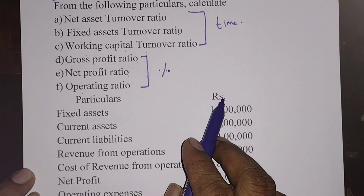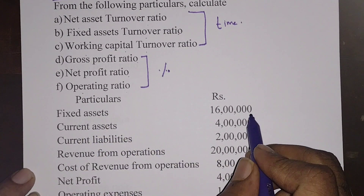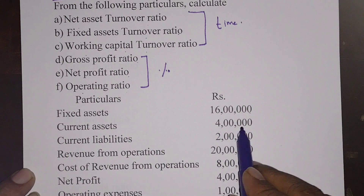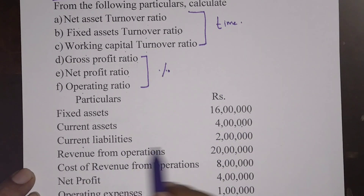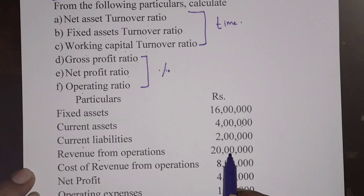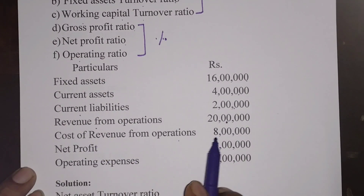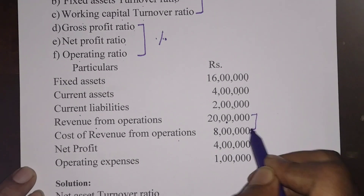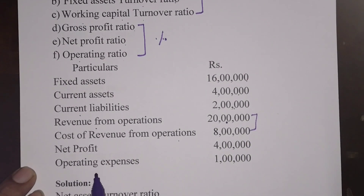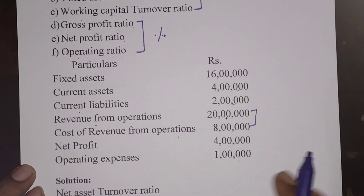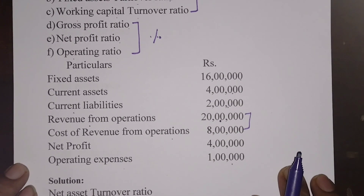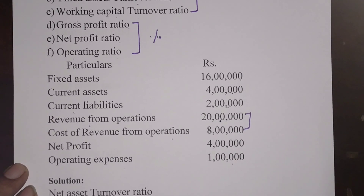Now the particulars and rupees: fixed assets 16 lakhs, current assets 4 lakhs, current liabilities 2 lakhs, revenue from operations 20 lakhs, cost of revenue from operations 8 lakhs, net profit 4 lakhs, operating expenses 1 lakh. This is the given information, and with it we have to calculate the required ratios.